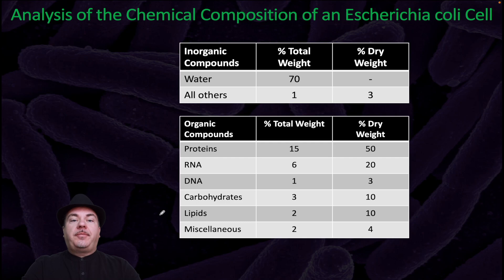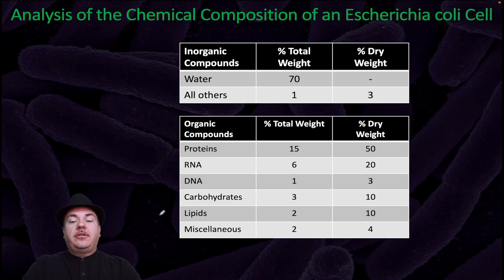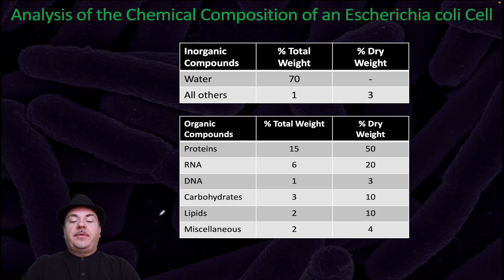As a representative bacterial cell, if we look at an E. coli cell and break down its chemical composition, about 70% of its total weight is water. If we ignore water and only look at the dry weight of the cell, half of the dry weight is made up of proteins, 20% is RNA, 3% is DNA, 10% is carbohydrates, 10% is lipids, and 4% is miscellaneous.